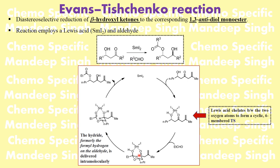As soon as the oxygen acquires a negative charge, it picks up the hydrogen. This intermediate then dissociates to give the 1,3-anti diol monoester. The key points are: the source of hydride is the formyl hydrogen on the aldehyde, it is delivered intramolecularly, and a beta-hydroxy ketone always gives the 1,3-anti diol monoester under these conditions.